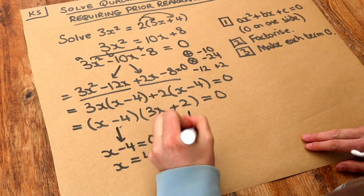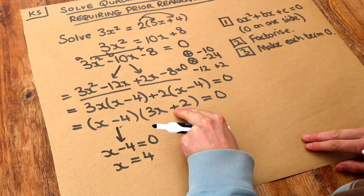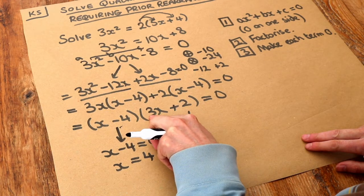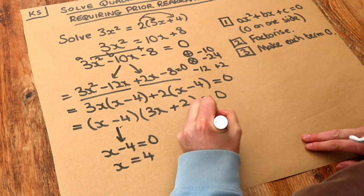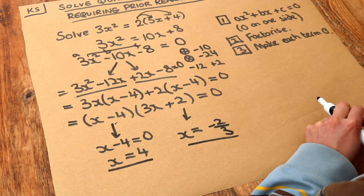And then, if we do a similar thing here, remember, we just negate that. So it becomes minus 2. But you have to divide by the number in front of the 3. So we get minus 2 over 3. And there we go. Those are our two solutions to this equation.